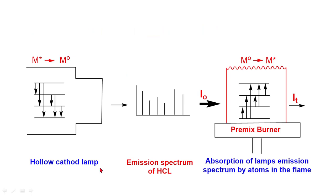This is the hollow cathode lamp where excited state atoms go to ground state and give rise to emission spectrum. This radiation is allowed to pass through the flame of premix burner. In the flame there are ground state gaseous atoms. They can absorb the characteristic radiation and go to the excited state.